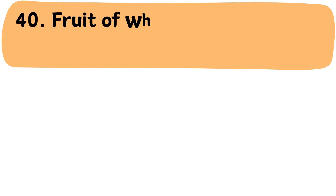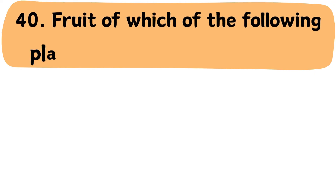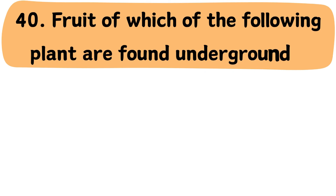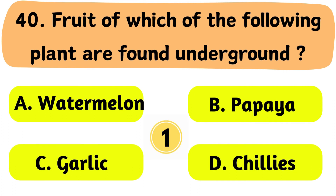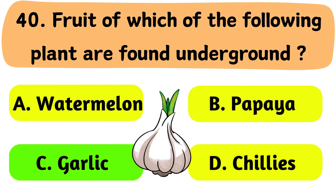Question No. 40: The fruit of which of the following plants is found underground? A. Watermelon. B. Papaya. C. Garlic. D. Chilis. The correct answer is Option C: Garlic.